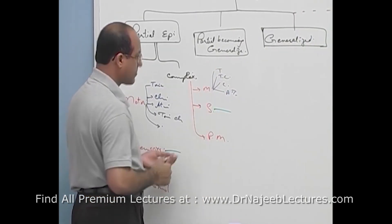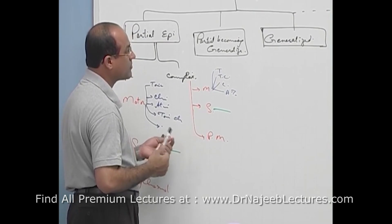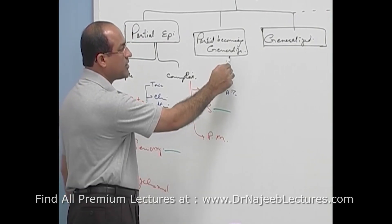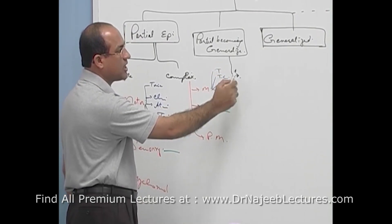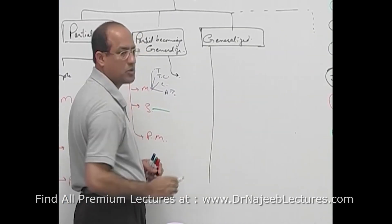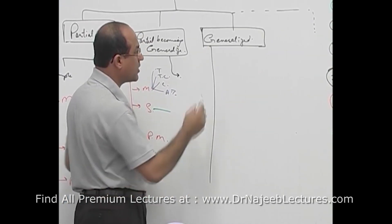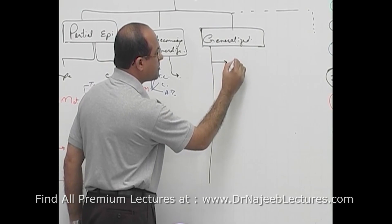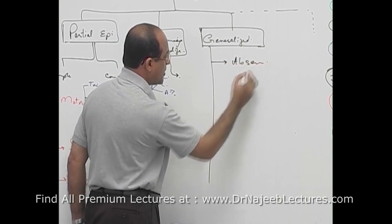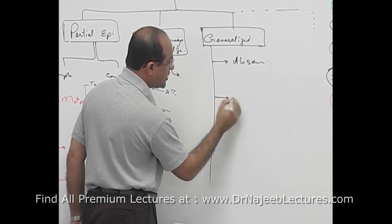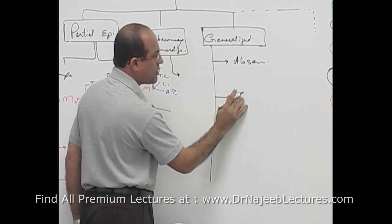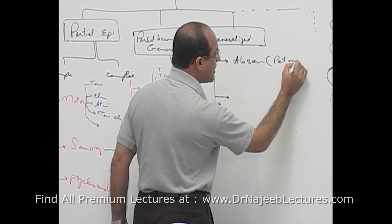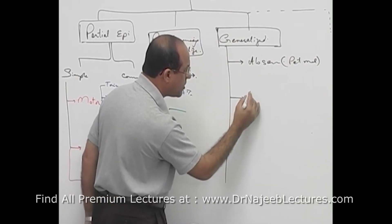Here it is — partial becoming generalized. Generalized epilepsy may be absence epilepsy, which is also called petit mal, or small epilepsy. I will go into detail of this right now.